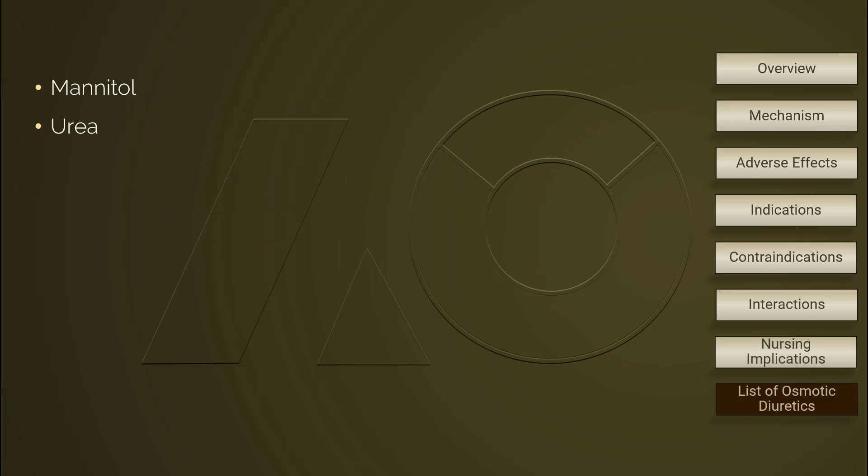Mannitol is the most commonly used osmotic diuretic. Urea is associated with hypernatremia because of excretion of electrolyte-free water.